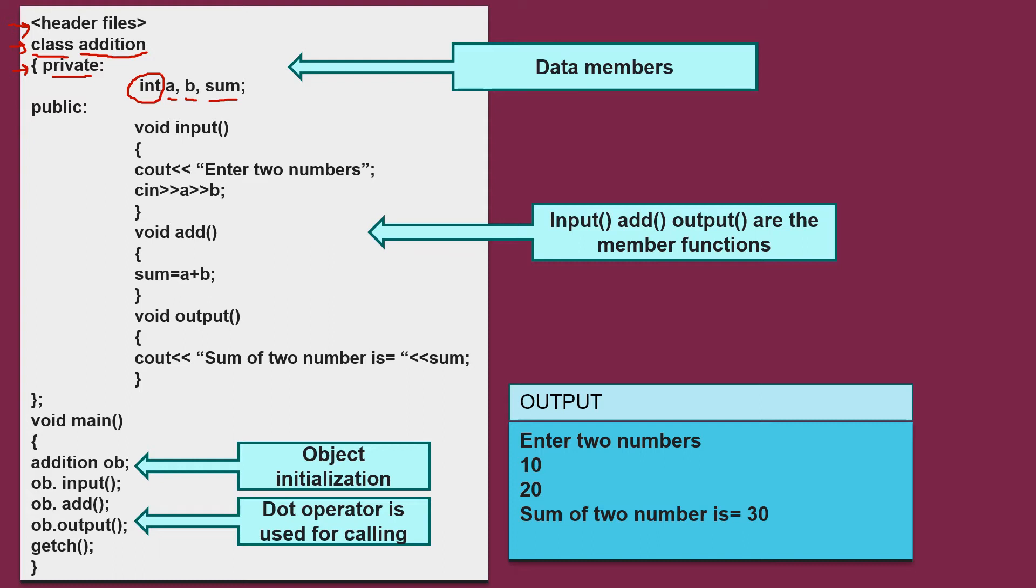Next, we are declaring all the member functions as public. Here, there are three member functions. First is input function in which you are getting the input from the users by declaring cout enter to numbers and cin for getting the variables A and B.